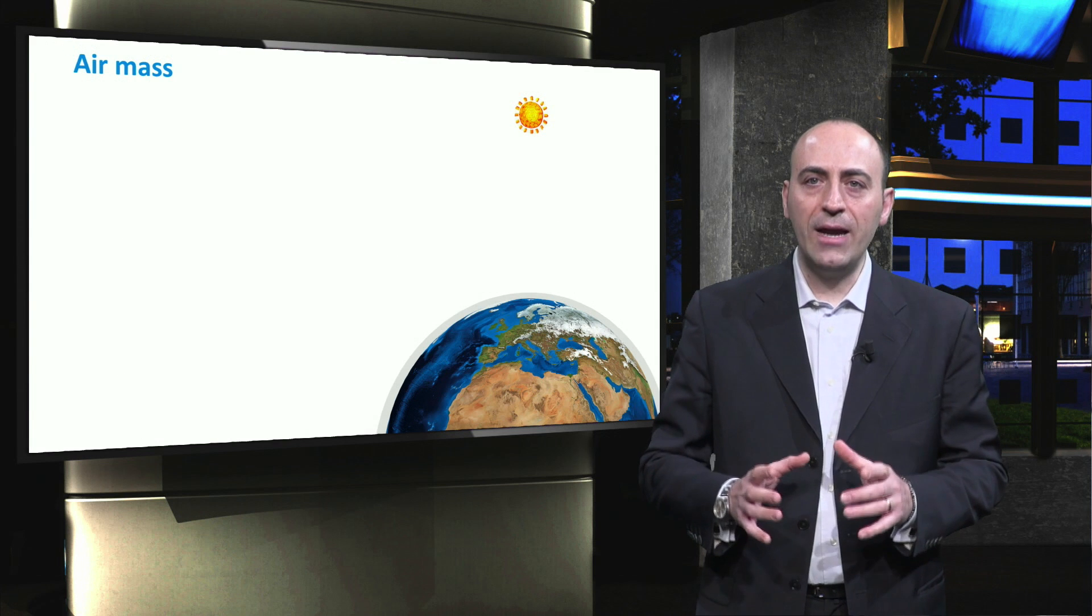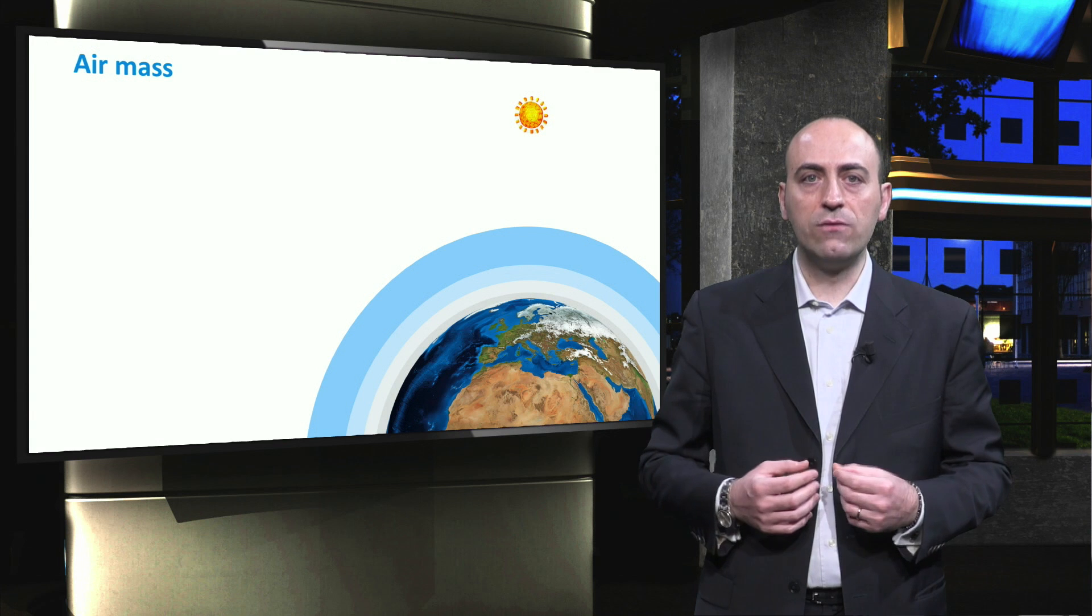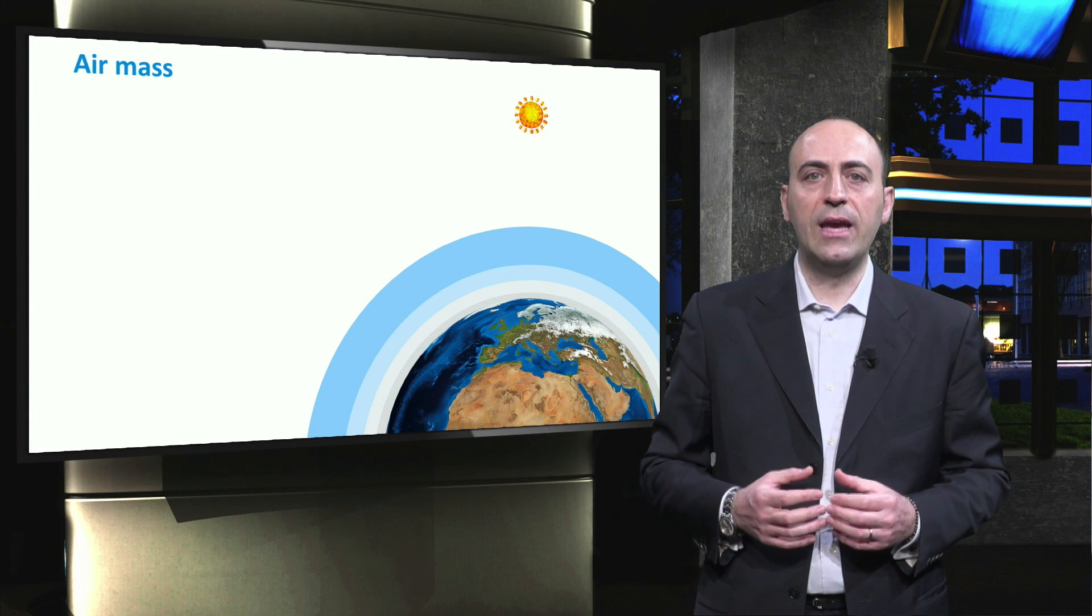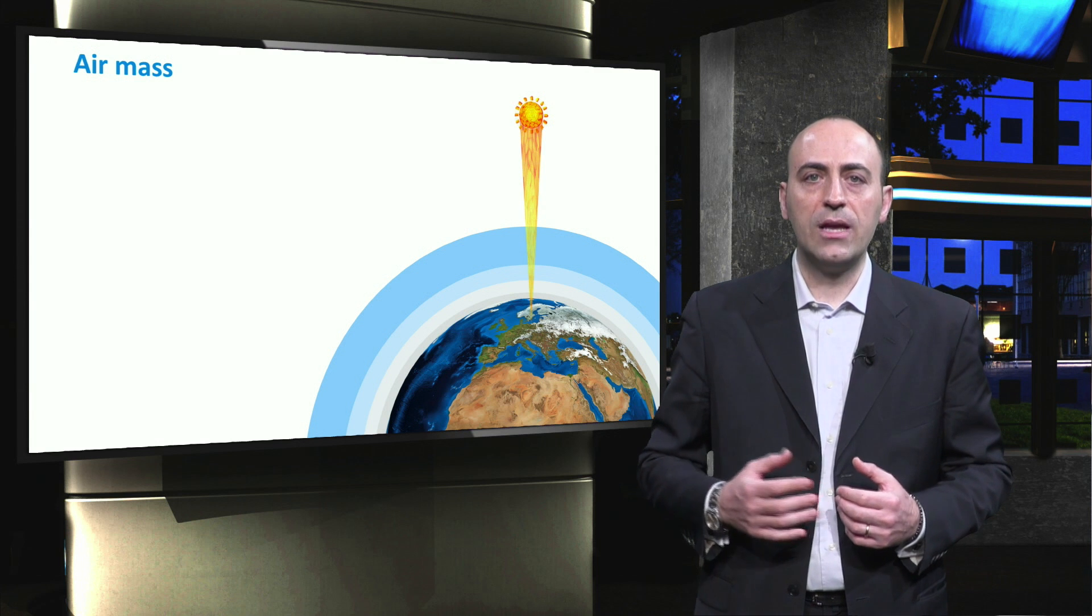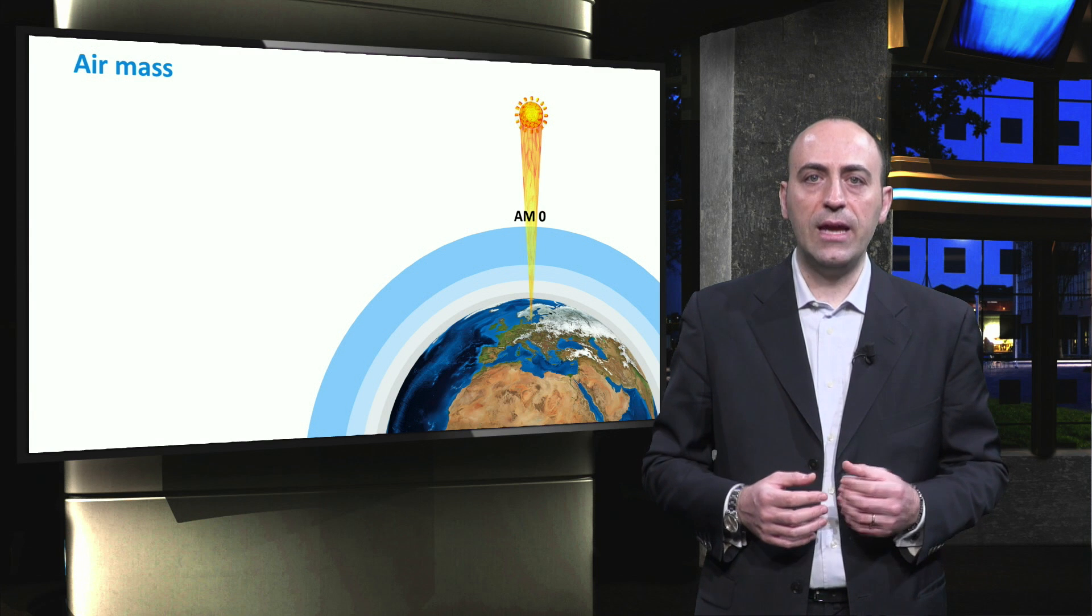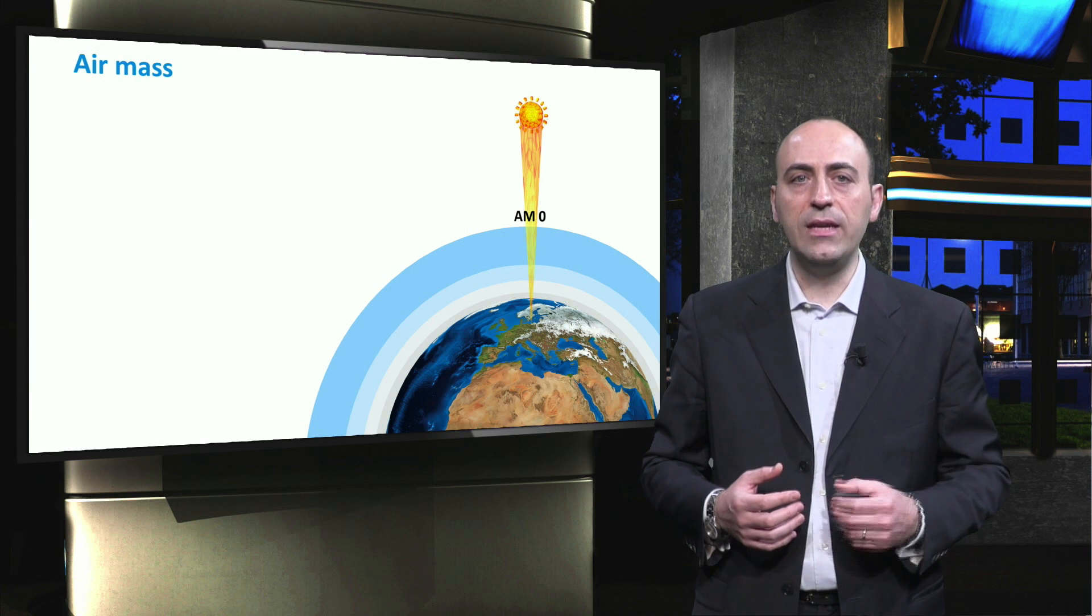Now, I want to remind you the meaning of the air mass, which is a measure of the length of the light path through the atmosphere. The reference to calculate the air mass is when the Sun is at its zenith, and here, as we have already seen, we can identify two spectra. Firstly, the AM zero, obtained outside the atmosphere, and then the AM one, obtained on the Earth's surface.